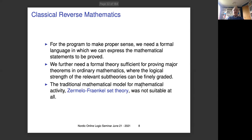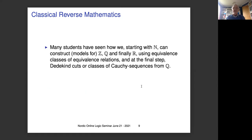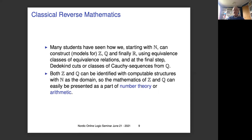The traditional mathematical model — Zermelo-Fraenkel set theory — was not suitable at all, because its axioms are quite violent from the perspective of reverse mathematics. Many students have seen how, starting with the natural numbers, we can construct models for the integers, the rational numbers, and finally the real line, using equivalence classes. Both ℤ and ℚ can be identified with computable structures with ℕ as the domain. So the mathematics of ℤ and ℚ can easily be presented as part of number theory, or arithmetic, as I will call it here.